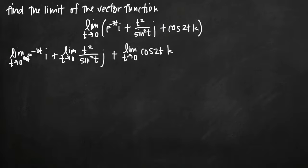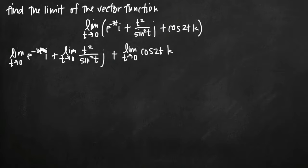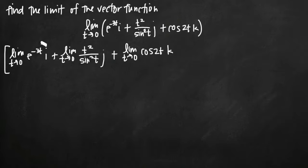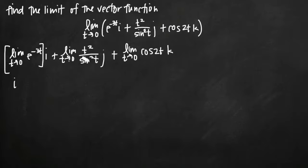We can just take each limit individually. If we evaluate e to the negative 3t as t goes to zero, we get negative 3 times zero, which is zero. e to the zero is just one. So this whole limit as t goes to zero just becomes one. We have one times i, or just i — it simplifies that easily.